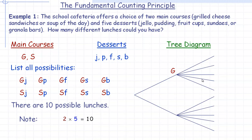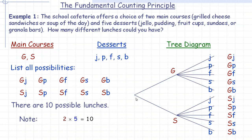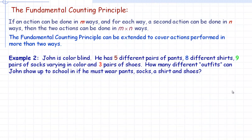We could also solve this with a tree diagram. This represents the start — you pick your main course first: grilled cheese or soup of the day. After each choice, you select a dessert: jello, pudding, fruit cup, sundae, or granola bar. So we list all possibilities: grilled cheese with each of the five desserts, then soup of the day with each of the five desserts. Counting them up, there are again ten possible lunches.